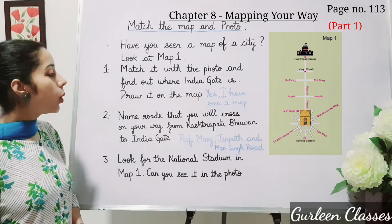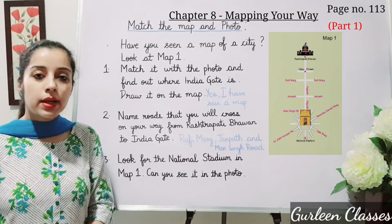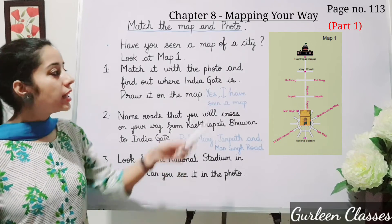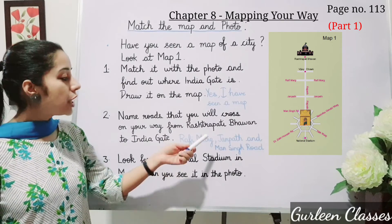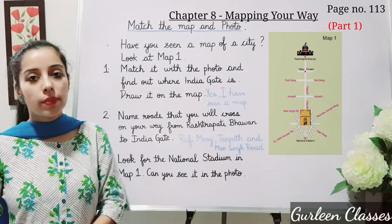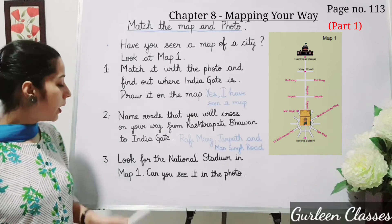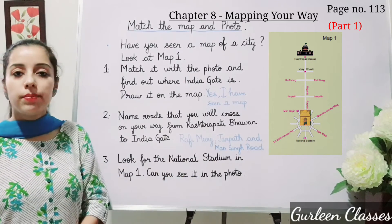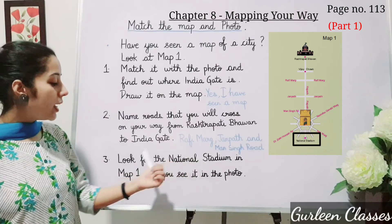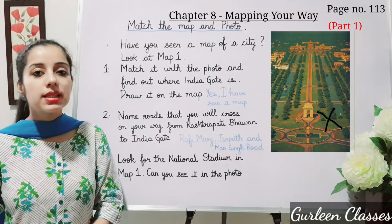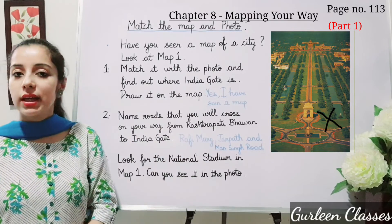Next question: name the roads that you will cross on your way from Rashtrapati Bhavan to India Gate. Just see the areas from Rashtrapati Bhavan to India Gate — what all areas have we crossed? Rafi Marg, Janpath, and Maan Singh Road. Next question: look for the National Stadium in Map 1 — can you see it on the photo? Yes, I can see the National Stadium in Map 1, but it cannot be seen on the photo.